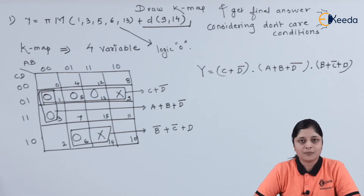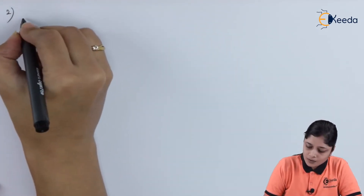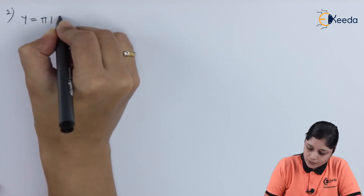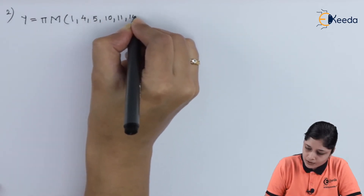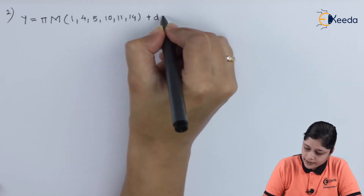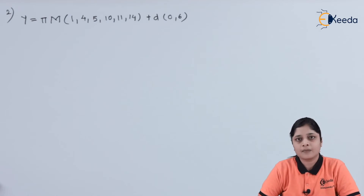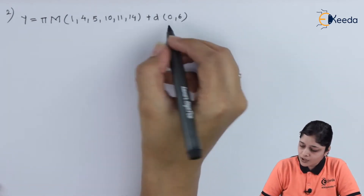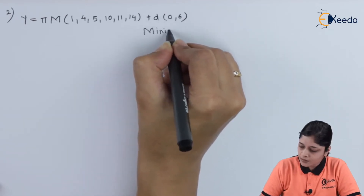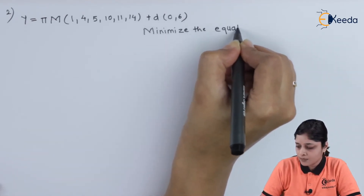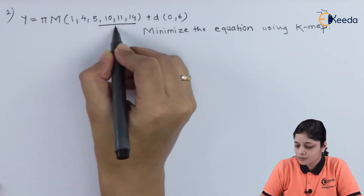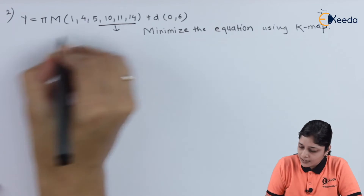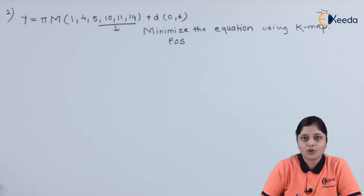This is all about the first problem. Now for the second numerical: Y is equal to product of max terms (1, 4, 5, 10, 11, 14) plus d inside the bracket (0, 6). Your aim is to minimize the equation using Kmap. These are all max terms, so it is a POS — product of sums — expression.